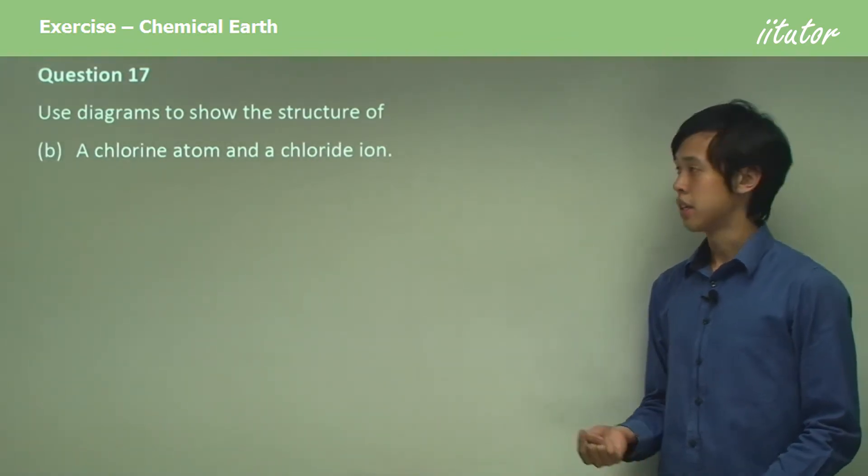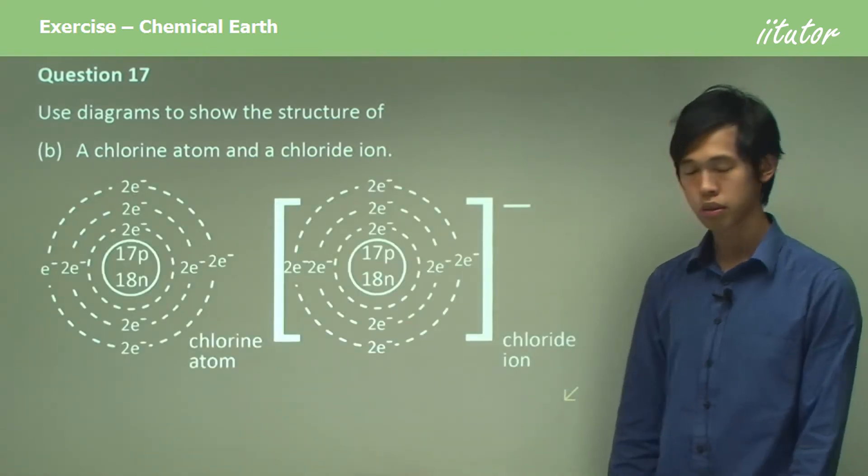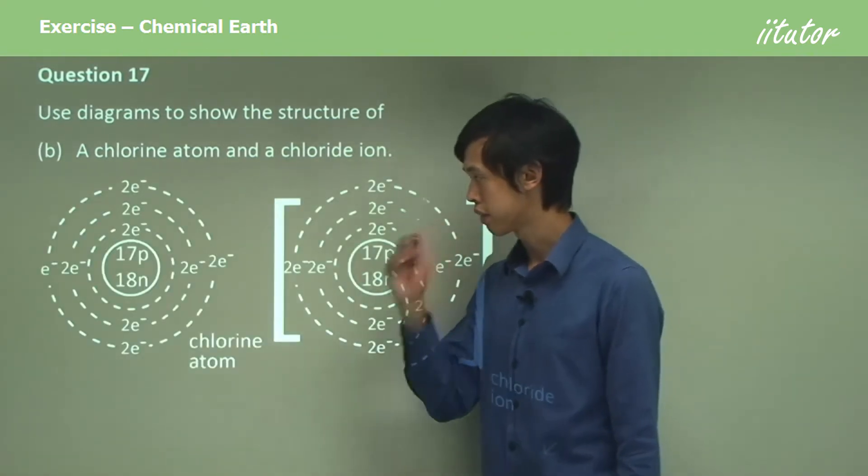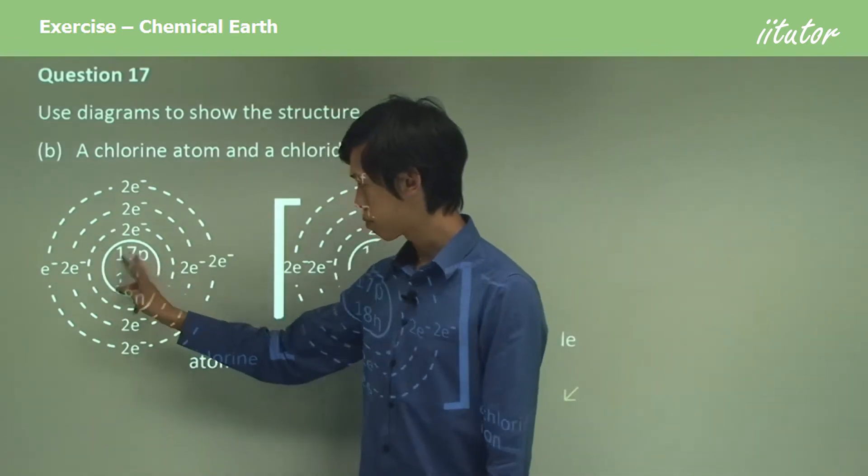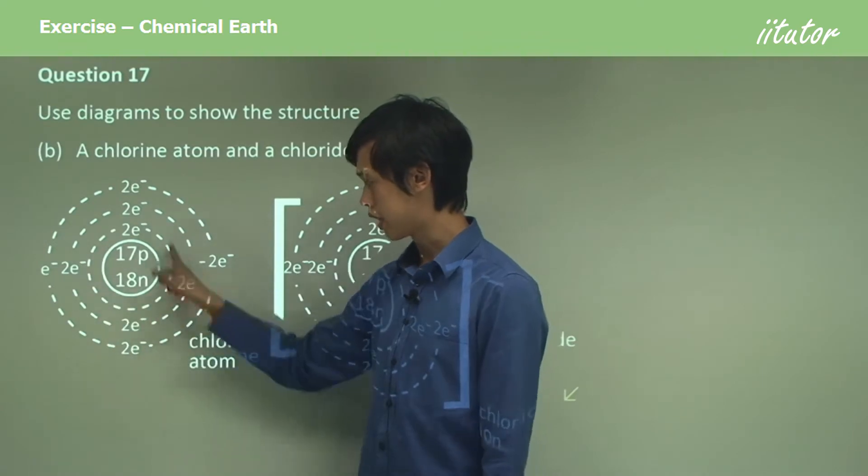Now what about part B, a chlorine atom and a chloride ion? Well, let's just follow the same methodology. There's 17 protons and 18 neutrons. There's two electrons in the inner shell.